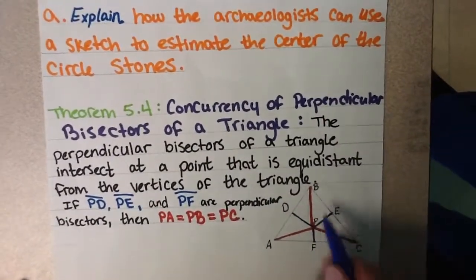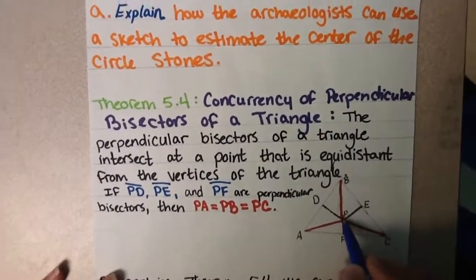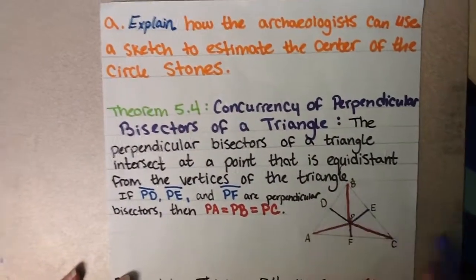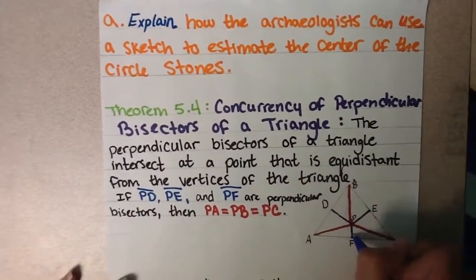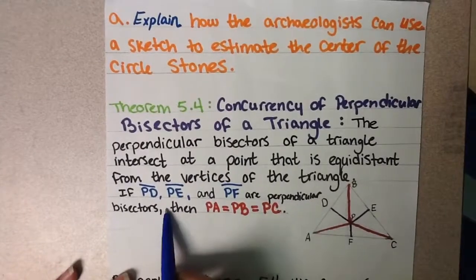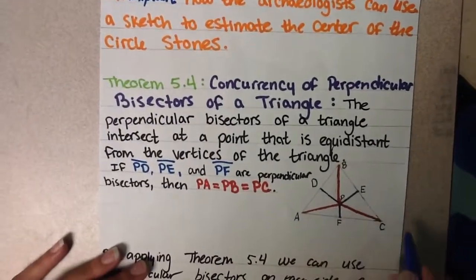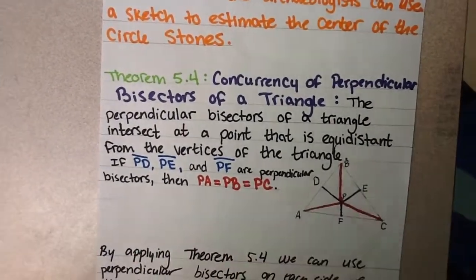For example, if line segment PD, PE, and PF are perpendicular bisectors, then PA, PB, and PC are going to be equidistant.